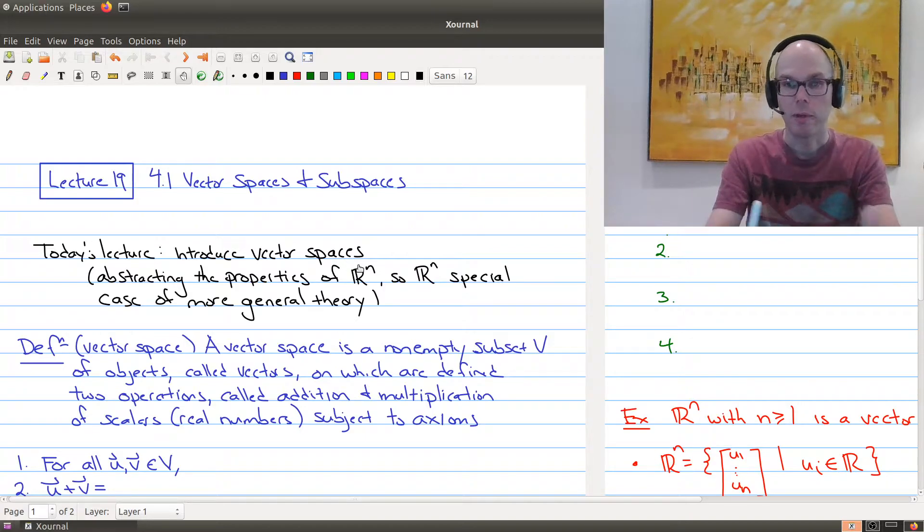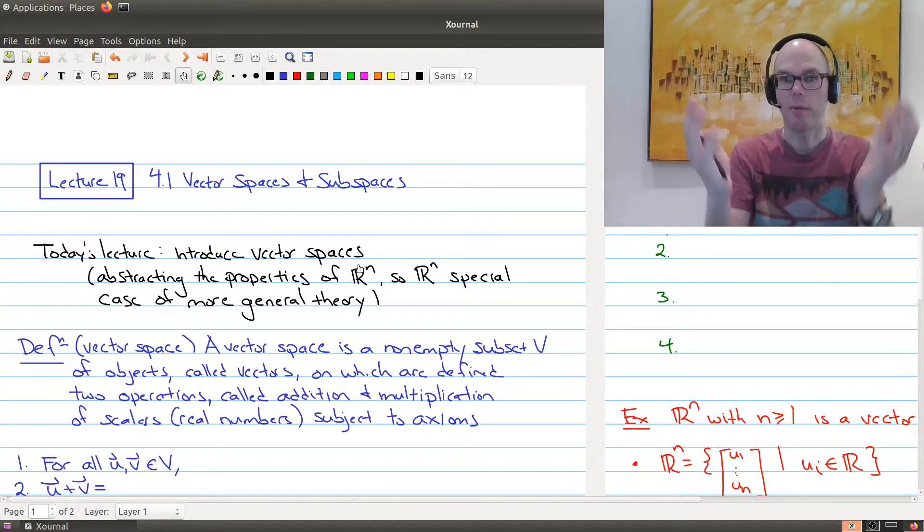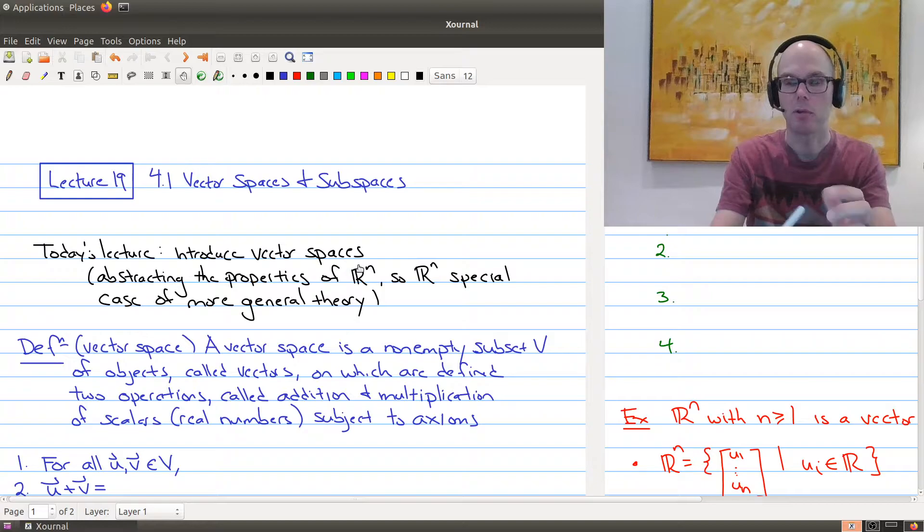And that's what a vector space is. It's this idea of abstracting the properties of Rn to apply to many different cases. So today's lecture gets a little bit more theoretical.